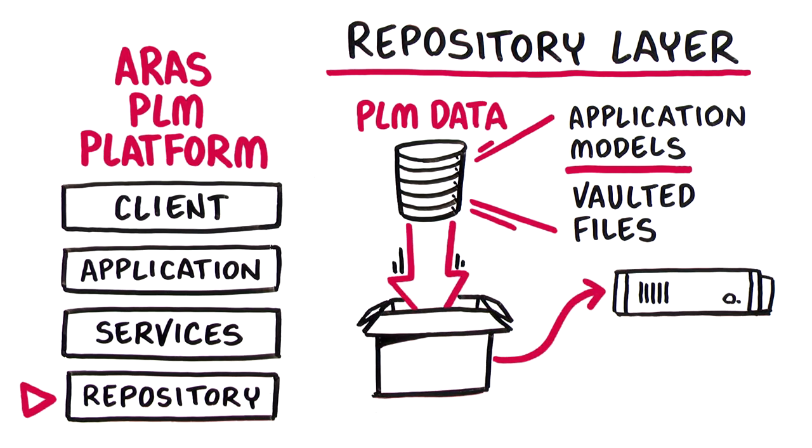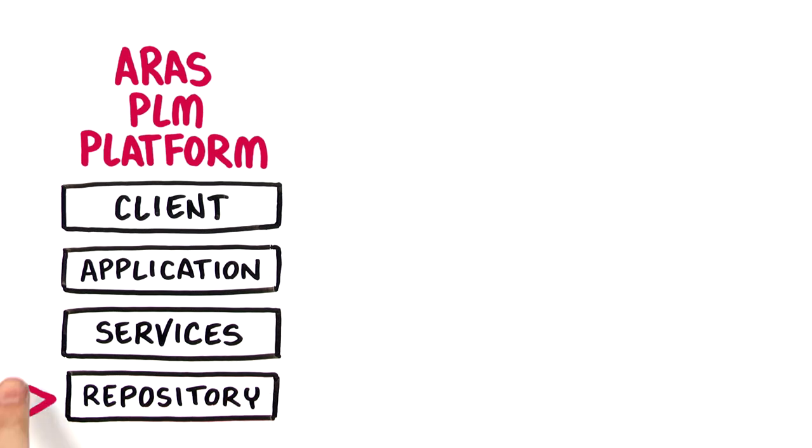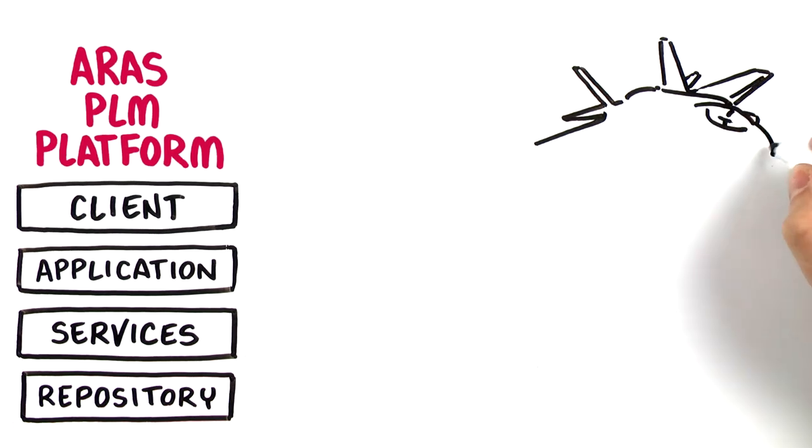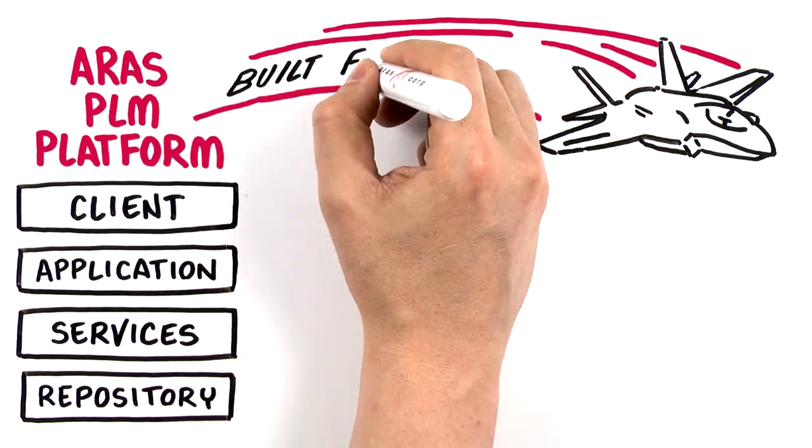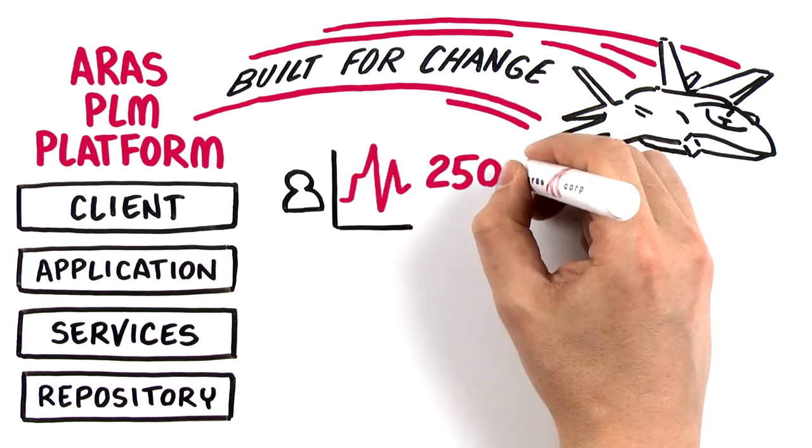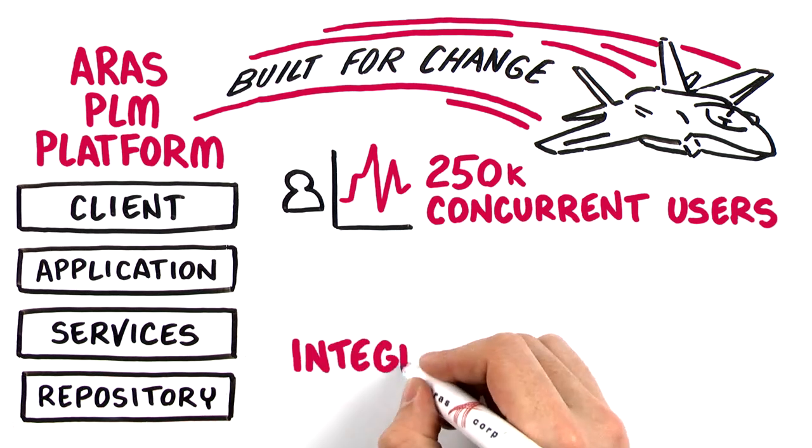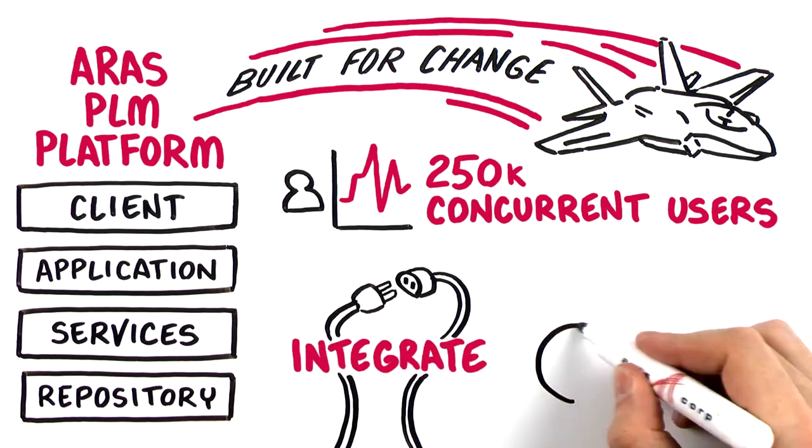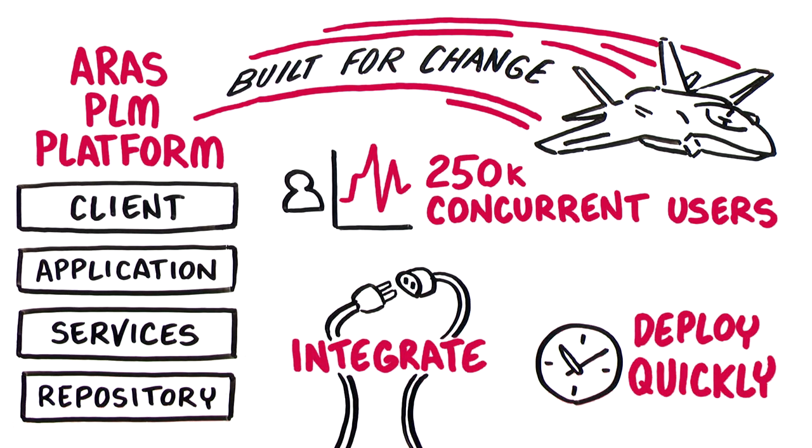The Aras PLM platform forms a powerful architecture built for change. It's proven to scale to 250,000 concurrent users, integrates well with other systems, and deploys quickly on-premise or in the cloud.